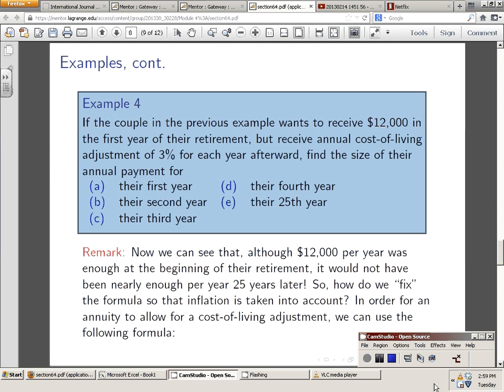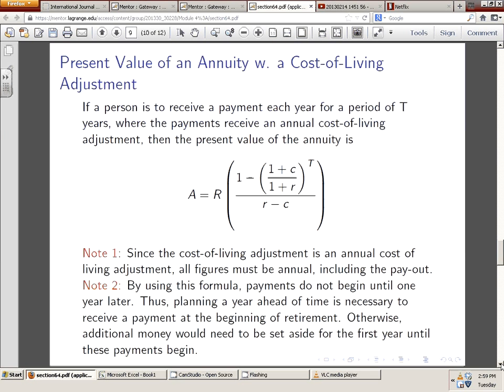Now, what we see is that $12,000 is not enough for all 25 years. So the question is, how do we fix, quote unquote, fix this problem of cost of living inflation?